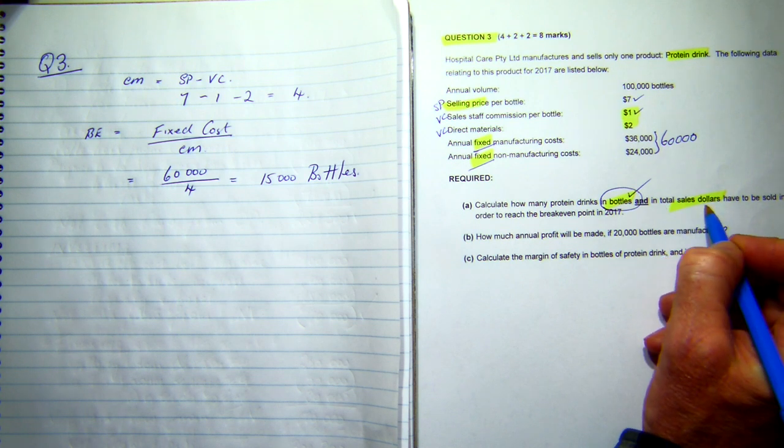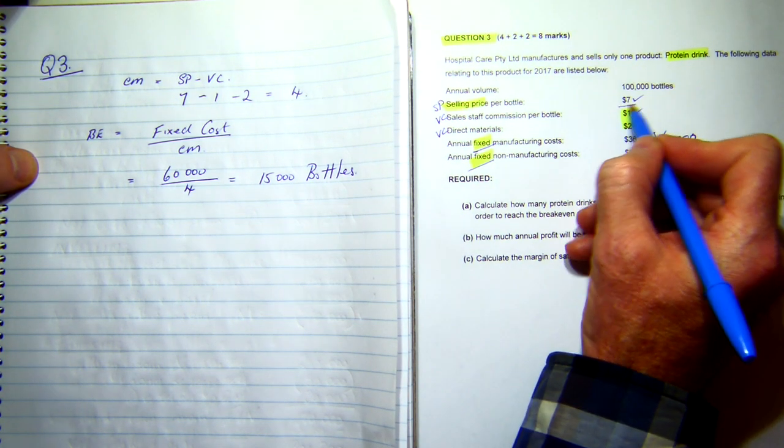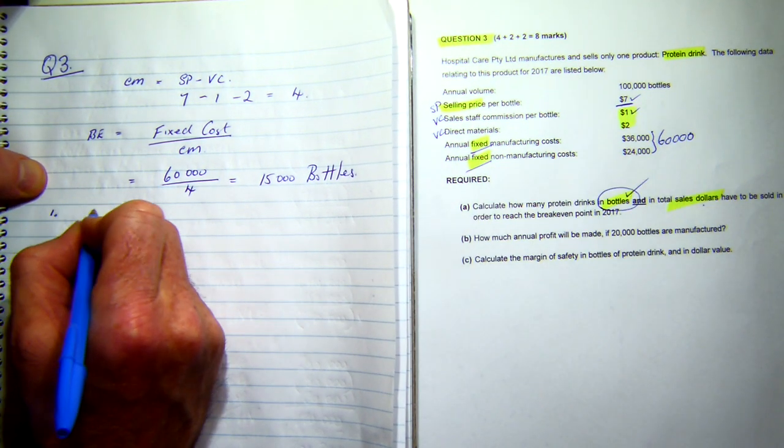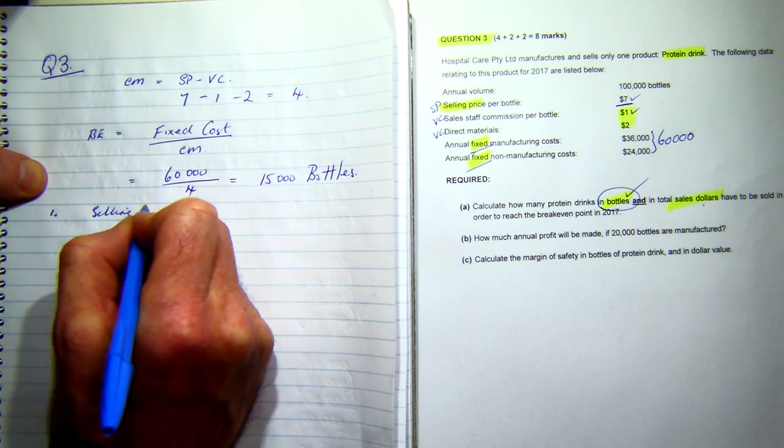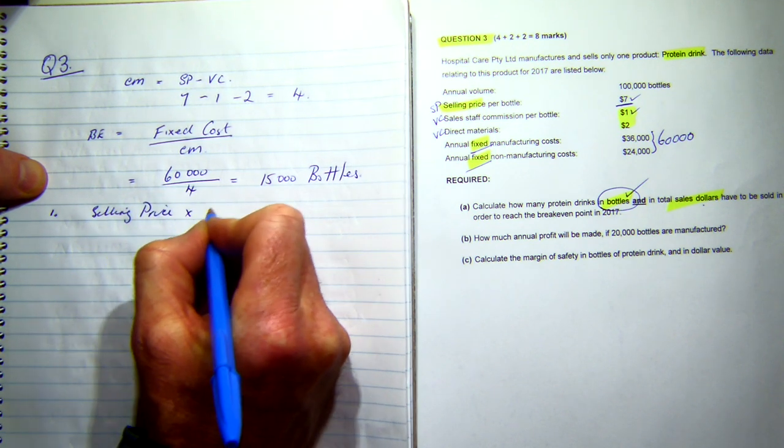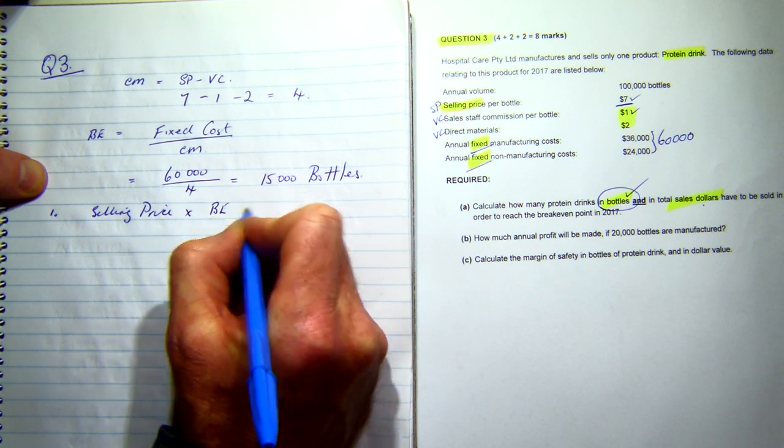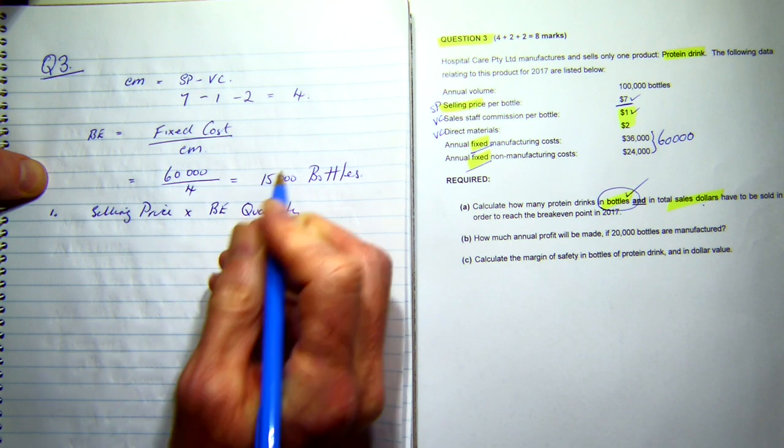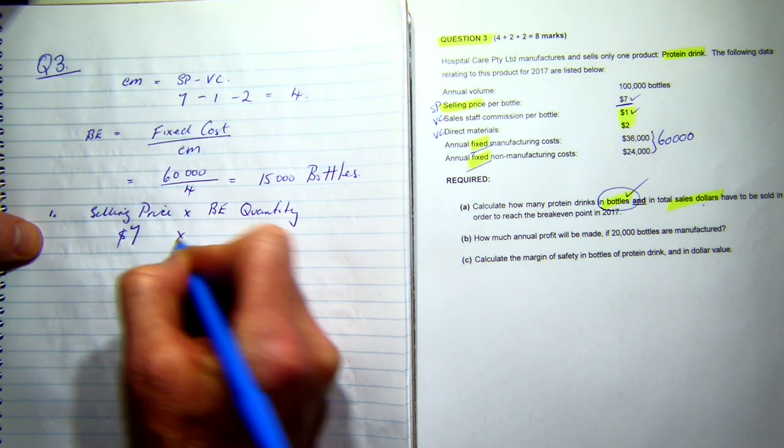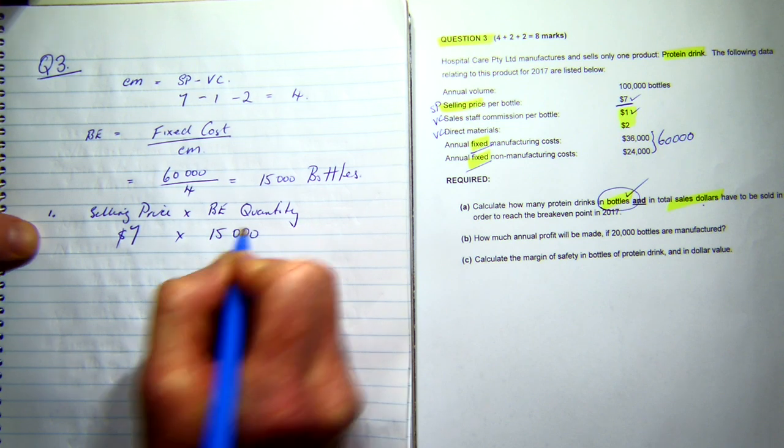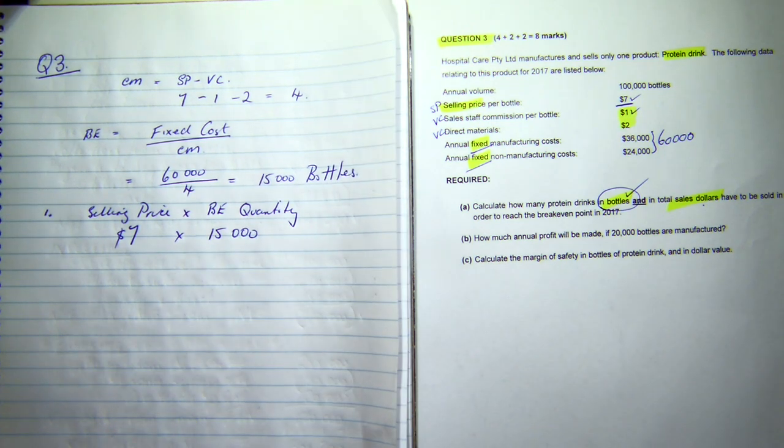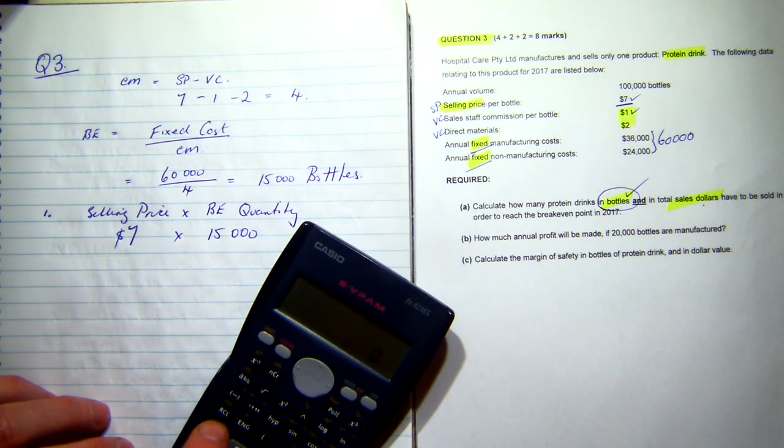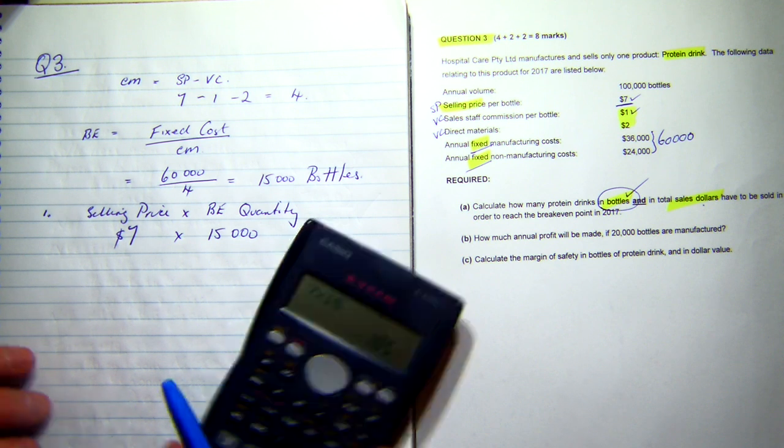It also says in total sales dollars. Now, there's two ways you can do this. We know what my selling price is, seven dollars per bottle, so option one, we can go selling price times break-even quantity. So that means seven dollars times fifteen thousand bottles. And that equals, lean over and grab my calculator, seven times fifteen equals one hundred and five thousand.